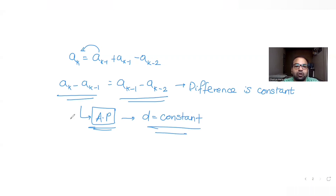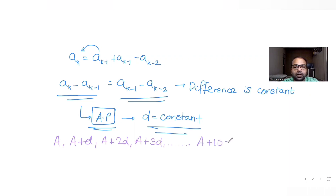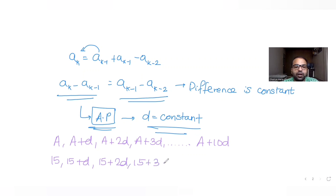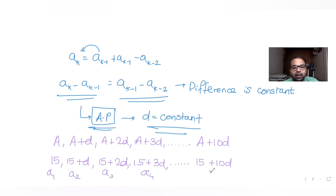Now we know the sequence is in arithmetic progression. The terms are A, A+D, A+2D, A+3D, and so on up to 11 terms. Substituting A1 = 15, we get: 15, 15+D, 15+2D, 15+3D, and the last term A11 is 15+10D. So these are our 11 terms.